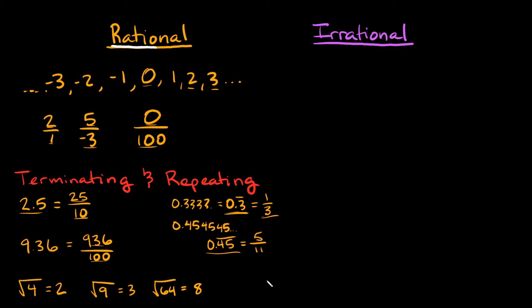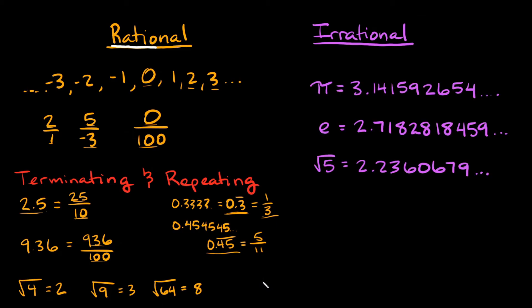Now, what is an irrational number? An irrational number is basically a decimal that doesn't terminate and doesn't repeat. A very popular example is pi — it doesn't end, doesn't repeat, it's 3.14159 and goes on forever. Another example is the number e, which equals 2.71828... going on forever without repeating.